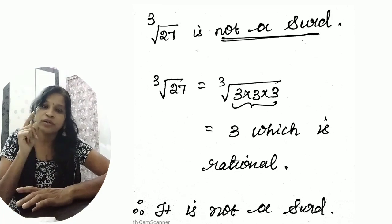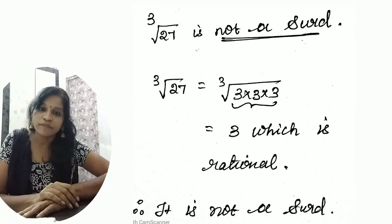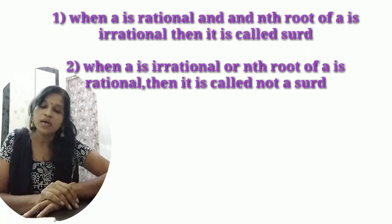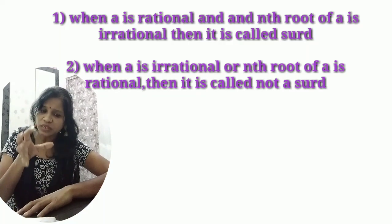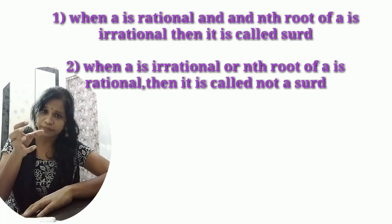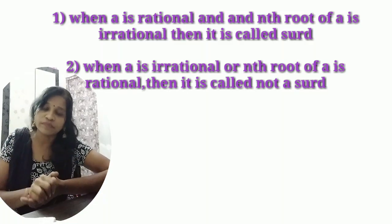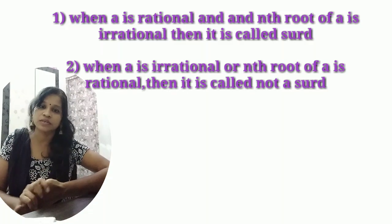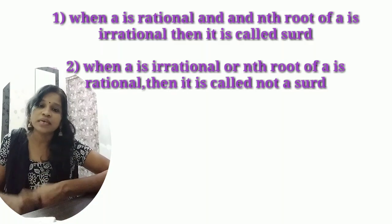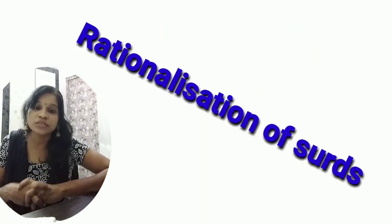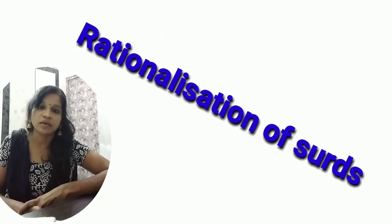To summarize: the radicand must be rational and the whole nth root of a must be irrational. The second concept I want to introduce now is the rationalizing factor.